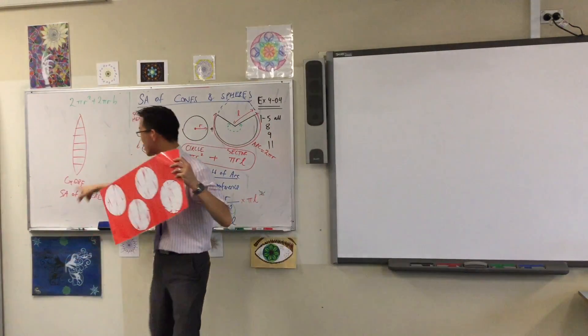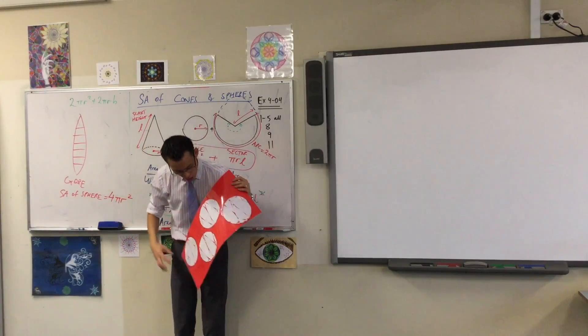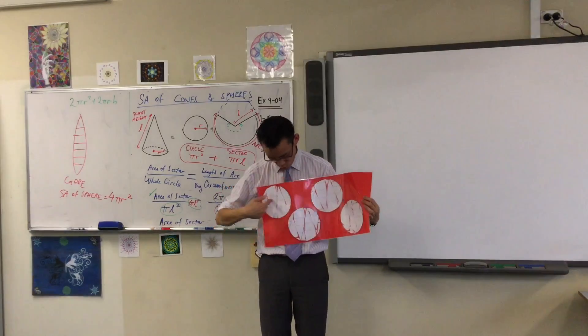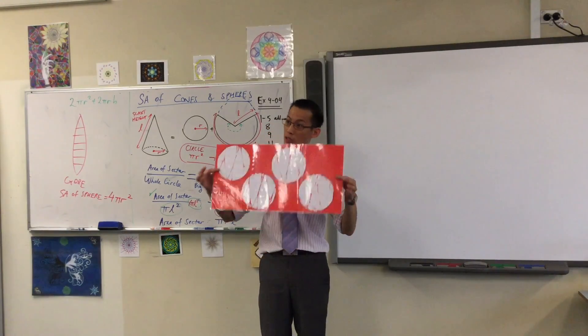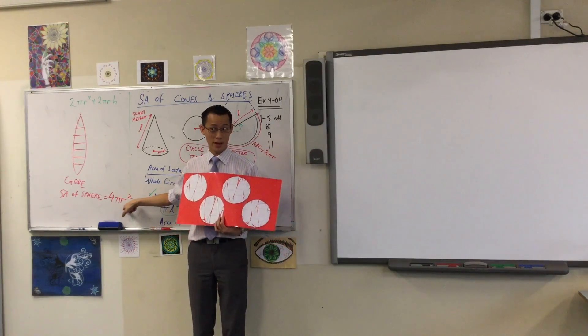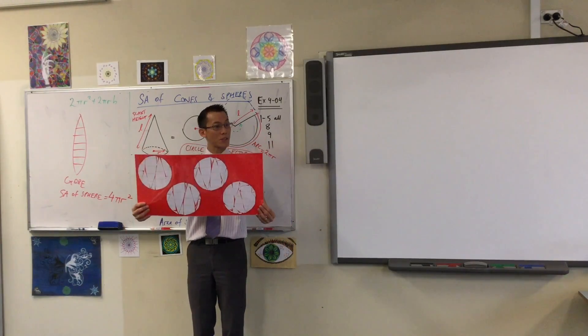Four pi R squared. That's it. It's remarkably simple. Now, I don't expect you to completely take my word for it. So, I had a bit of time one day and I did exactly that. If you cut out all of these gores, I think I had nine of them in the end. And you reassemble them, you get one, two, three, four circles. Every circle has an area of pi r squared. So, four pi r squared.